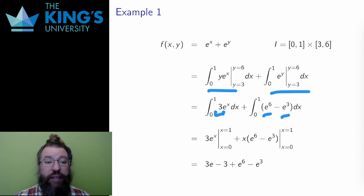Then I integrate in x. e to the x is its own derivative, and the integral in the second piece is constant, so the antiderivative is x times that constant.